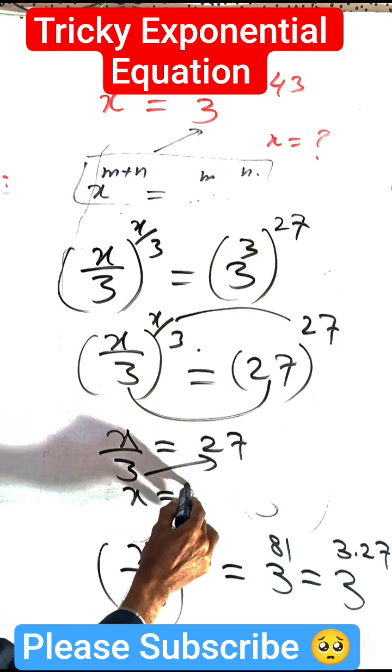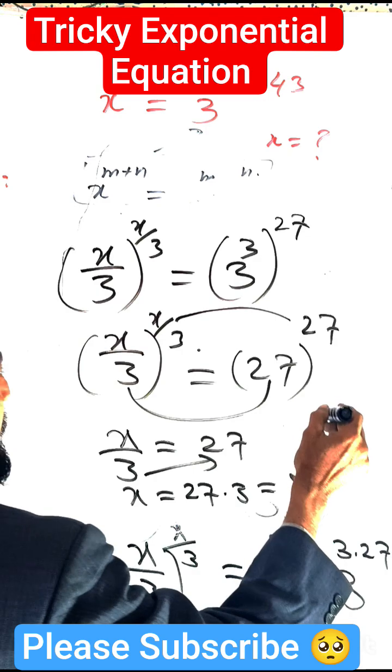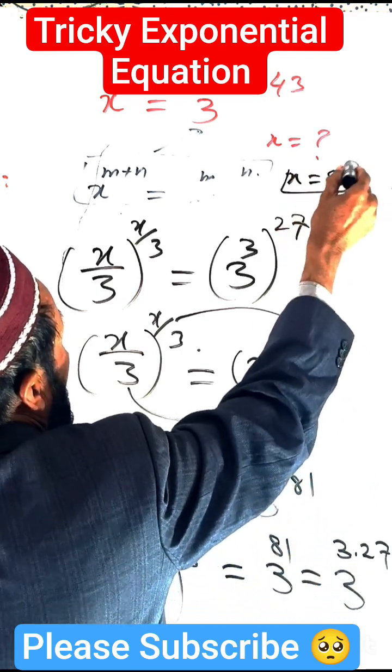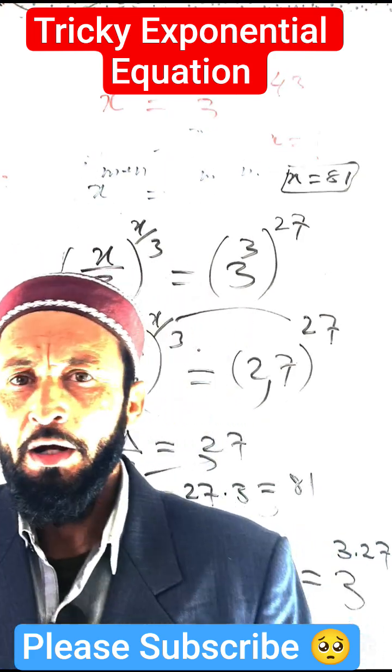This 3 is multiplied, so x equals 27 times 3, which equals 81. So x equals 81 is the solution of this question. Thank you very much for watching, please subscribe my channel.